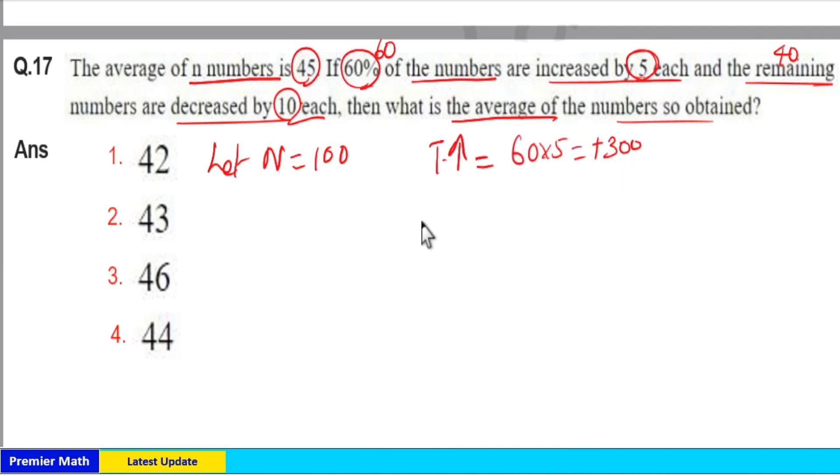Now total decrement here is equal to remaining 40 numbers decreased by 10 each, so 40 into minus 10 is minus 400 as the total decrement. Now overall increment or decrement is equal to minus 400 plus 300, minus 100 is the overall change.